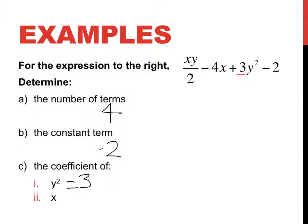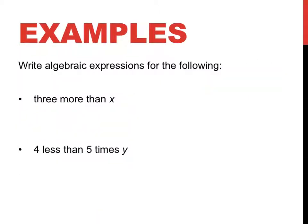What's the coefficient of x? Now, this x here is not x by itself. It is xy. So you're actually looking for this term here. What's the coefficient of x? Well, the coefficient of x is negative 4 because that is what is directly in front of the x.